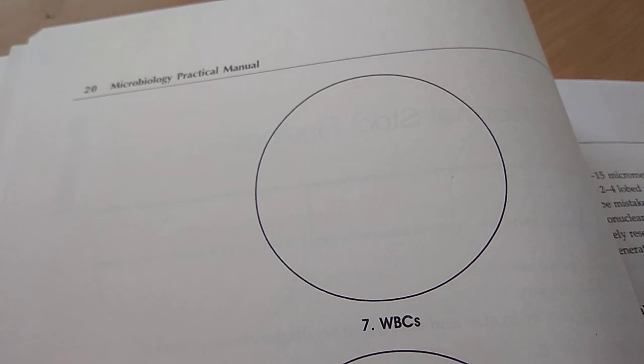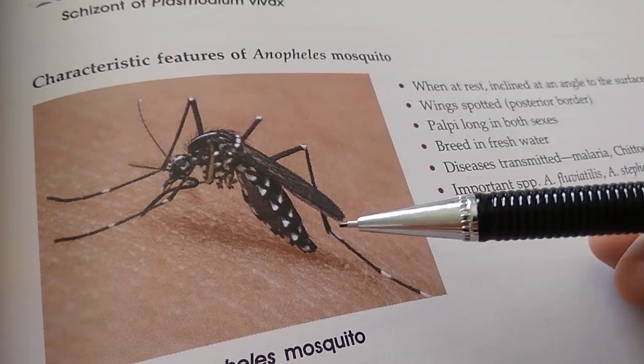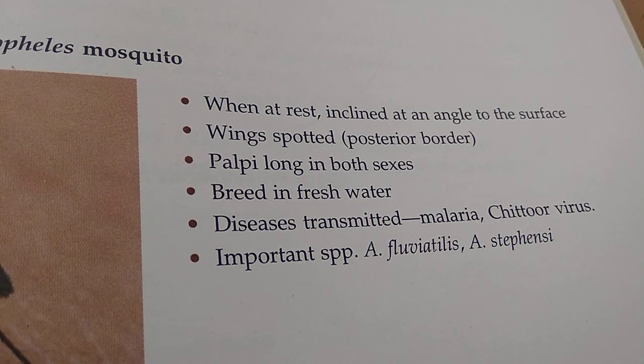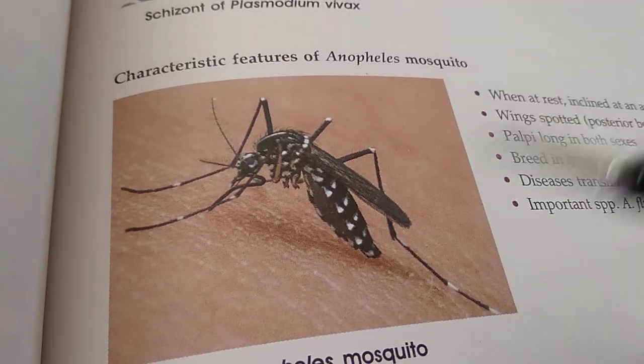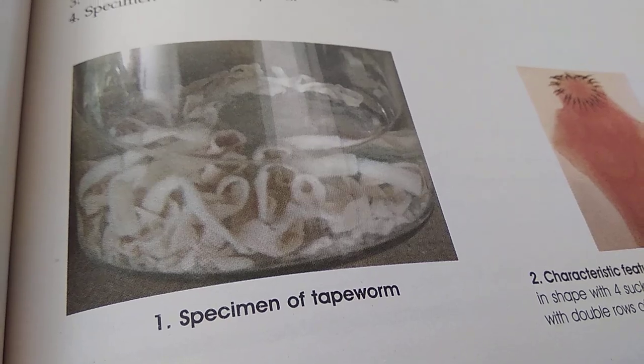I'm just going to turn a few pages here and there. Let's look at what space they have left — WBCs. This one is your mosquito — this is the Anopheles. Nicely they have written; it has spotted wings, it rests at an inclined angle to the surface. Eggs of helminths — cestodes. Look at these nice photos. Specimen of tapeworm.